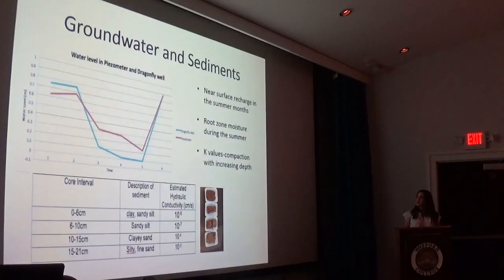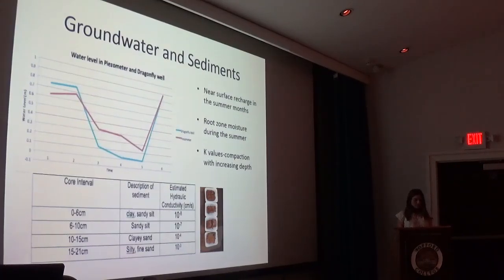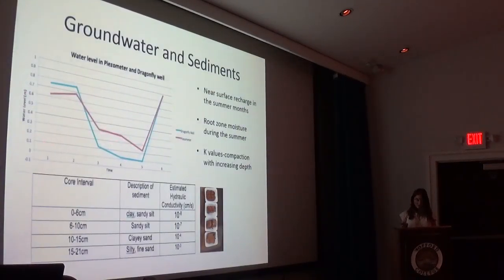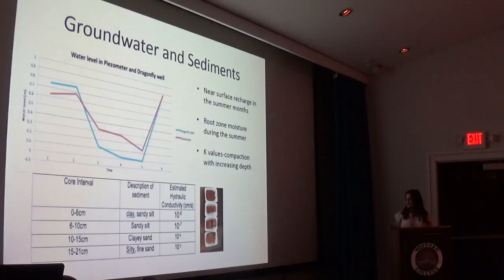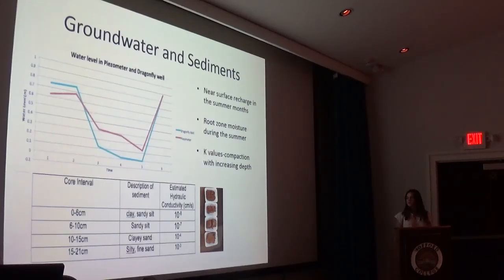I also wanted to see what the inputs of groundwater and sediments were like in these wetlands. I installed a piezometer about six feet into the ground near the Dragonfly well and compared the water levels about six times during the course of six months. I found that when there's no standing water, the groundwater actually recharges the near surface, keeping the root zone moist and allowing plants to grow in the dry summer. I also looked at sediment composition and found that the hydraulic conductivity — a measure of how well a substance moves through the soil — decreases with depth. This means that moisture moves through the sediments near the surface and holds moisture as you go deeper, keeping roots moist and allowing more vegetation during the dry summer.